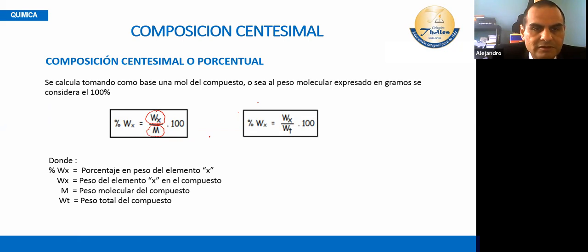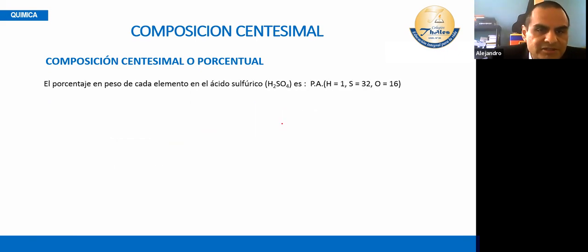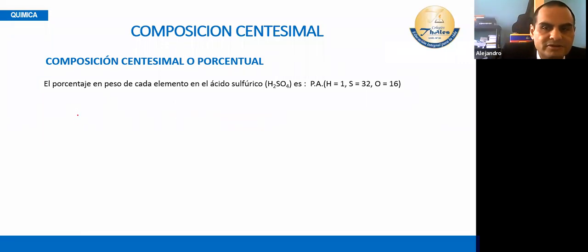Si tuvieses porcentaje en peso, pones el peso que tienes sobre el peso total que te están dando. Esto lo vamos a ver con un ejemplo. El porcentaje en peso de cada elemento del ácido sulfúrico — eso es lo que nos están pidiendo. El ácido sulfúrico vamos a trabajar acá.